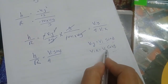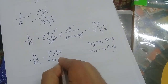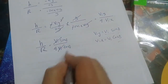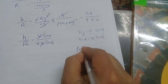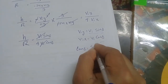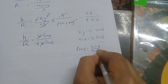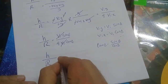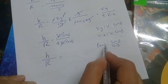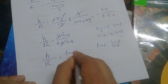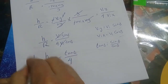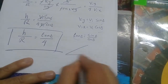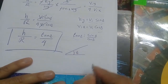We can cancel V_i with V_i, so we get sine(θ) over cosine(θ). We have learned that tan(θ) equals sine(θ) over cosine(θ), so we can write tan(θ) divided by 4.